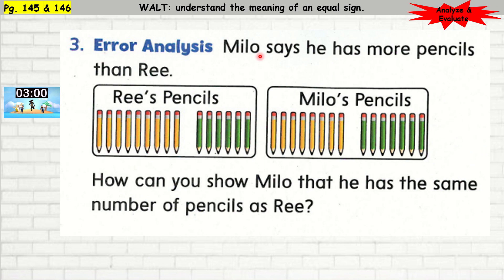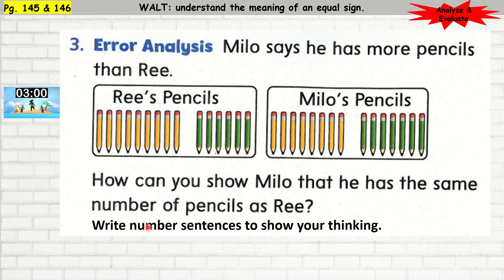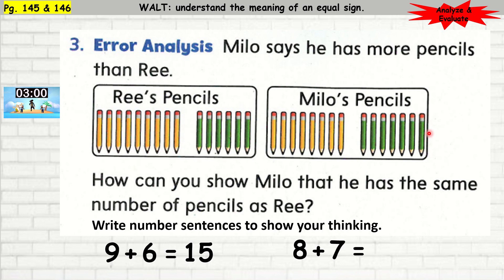Question number 3 — error analysis. Milo says he has more pencils than Rhi. How can you show Milo that he has the same number of pencils as Rhi? Write number sentences to show your thinking. For Rhi, we count 9 yellow pencils and 6 green pencils: 9 plus 6 is 15. For Milo, counting his pencils: 8 plus 7 is 15. Is 15 the same as 15? Yes, they are equal.